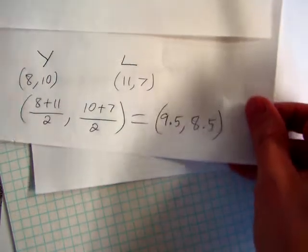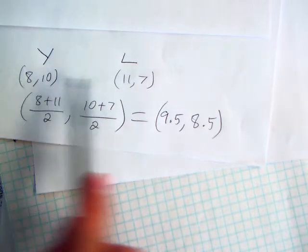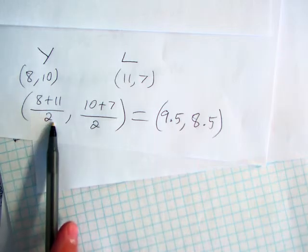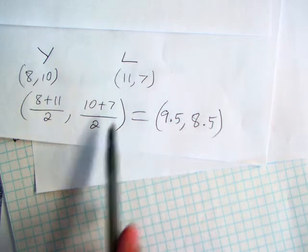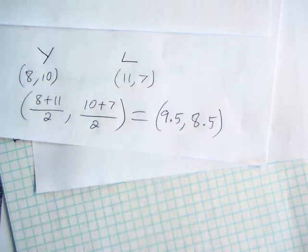For Y and L, here's what that looks like. I add 8 and 11 together and I divide them by 2. I add 10 and 7 together and I divide them by 2. Your answer should be written as a coordinate. And it's okay if you get decimals like 9.5 and 8.5. That's the correct answer. You would then find the midpoint of the other diagonal.